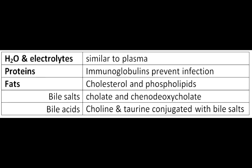Bile is composed of water, proteins, and fats. Observe that the fats have been categorized into cholesterol, phospholipids, and bile acids and salts. The water and electrolytes are similar to plasma. Cholesterol and phospholipids are the fats, and these are the bile salts and acids.